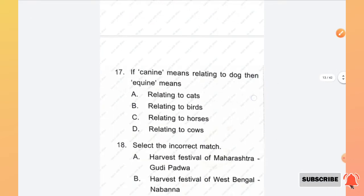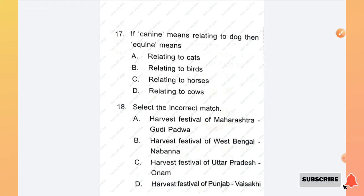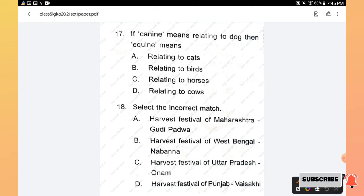Question number 17 and 18: If canine means relating to dog, then equine means: relating to cats, relating to birds, relating to horses, relating to cows. The right answer is option C, relating to horses.